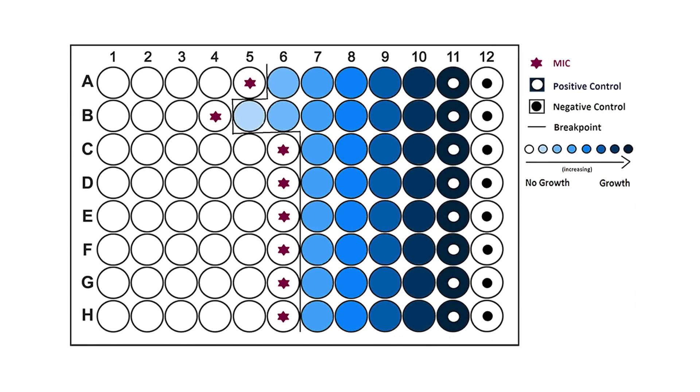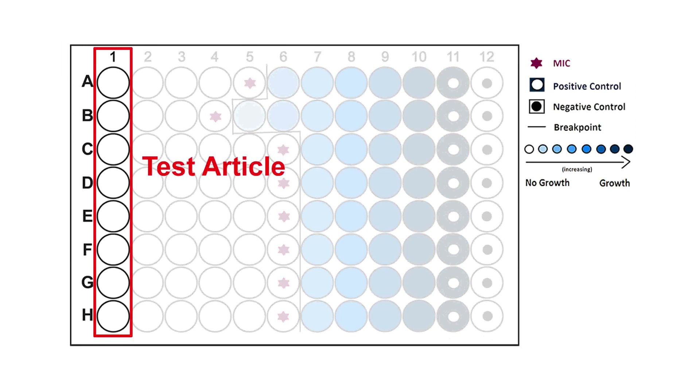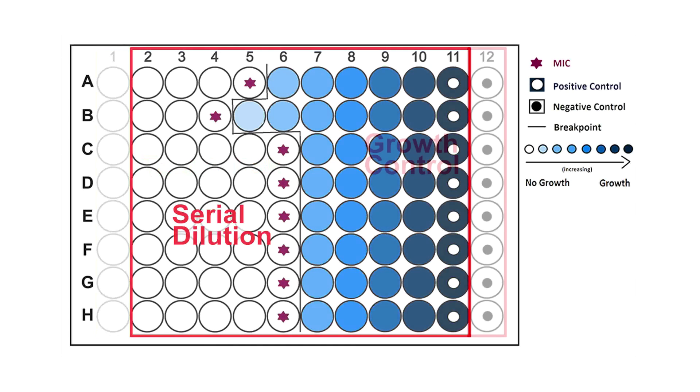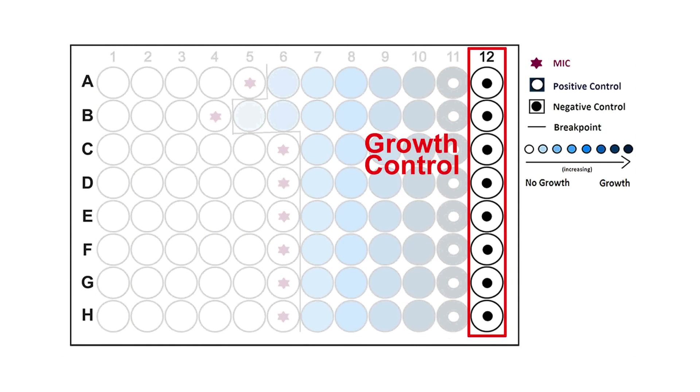As you look at the plate, it has 12 columns. Column 1 would get the test article, which is made at 2x concentration. And then you look at columns 2 to 11, these are used for two-fold serial dilutions. We also use a growth control in column 12 as our negative control.